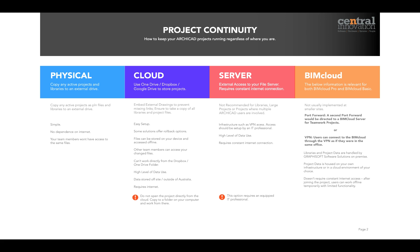The last option we have is using BIMcloud, and this information is relevant for both BIMcloud and BIMcloud Basic users. BIMcloud works by storing the project somewhere in your office computer or office server and then sharing copies of that to all joined participants. From then on, only changes are sent back to the server and to the other users. So once we do an initial download of the entire project, any extra data is very small comparatively. Because there are copies of the projects on everyone's computer, there's a high level of redundancy. The BIMcloud software creates not only PLN backups but also .bimproject backups, which can be opened on another BIMcloud or BIMcloud Basic installation.